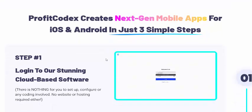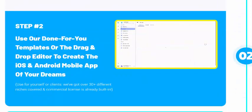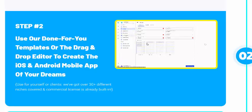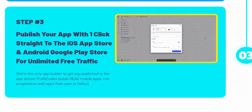Now let's see how Profit Context works. Profit Context creates the next generation mobile apps for iOS and Android in just three simple steps. Step one: log in to the dashboard. Step two: use the drag-and-drop editor and create your iOS and Android mobile apps using templates. Step three: publish your apps with one click to the iOS App Store and Google Play Store for unlimited free traffic.